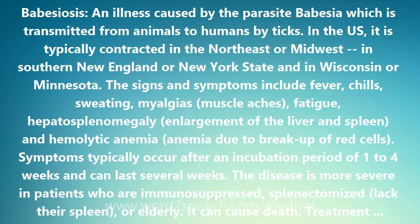Humans are, for all practical purposes, dead-end hosts, and there is probably little, if any, subsequent transmission that occurs from ticks feeding on infected persons. However, human-to-human transmission can occur through blood transfusions. Deer are the hosts upon which the adult ticks feed and are indirectly part of the Babesia cycle as they influence the tick population. When deer populations increase, the tick population also increases, thus heightening the potential for transmission.